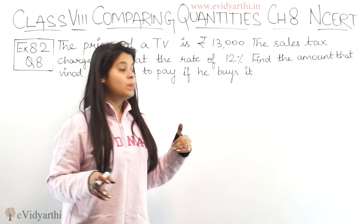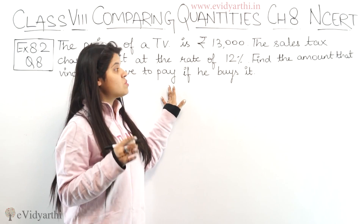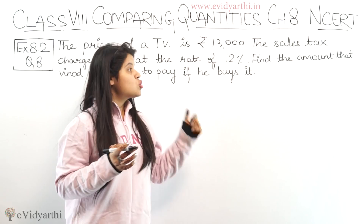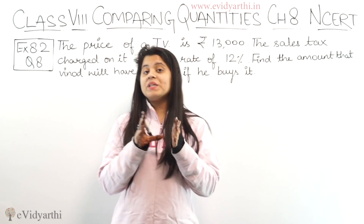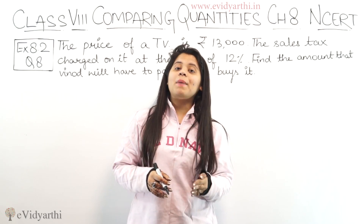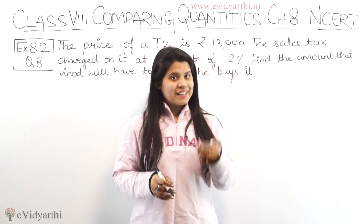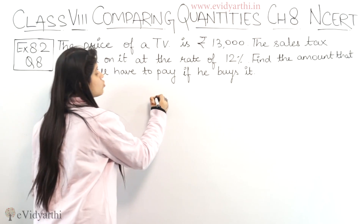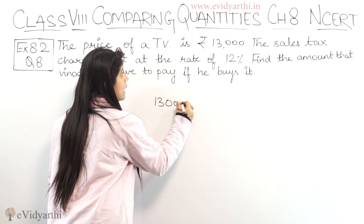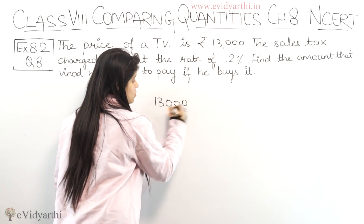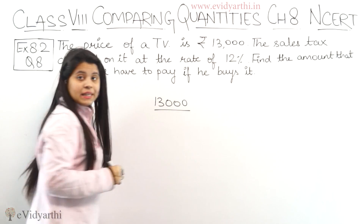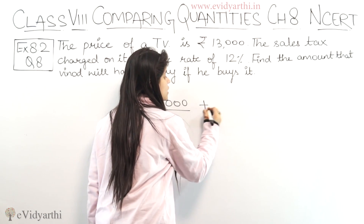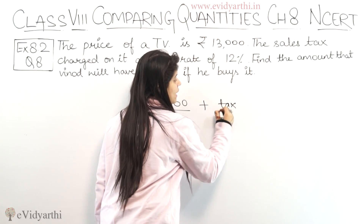Now, we have to find the amount that Vinod is going to pay when he purchases it. If he goes to purchase it, then what amount does he need to pay? It is very clear that the original price is 13,000, and you also have to pay the tax on it.